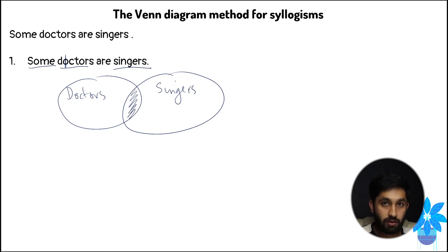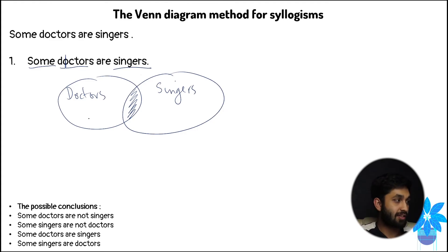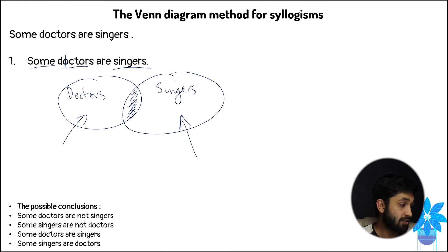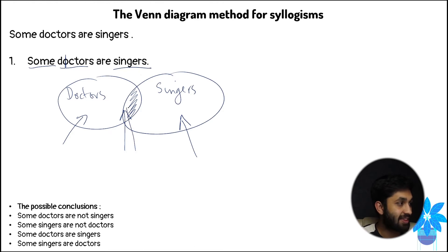The possible conclusions from 'some doctors are singers' are: some doctors are not singers (the doctors-only portion), some singers are not doctors (the singers-only portion), some doctors are singers (the overlapping center), and some singers are doctors (also the overlapping center portion).